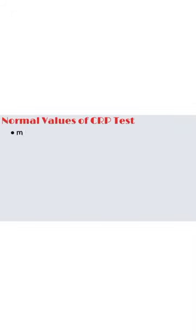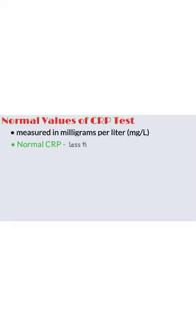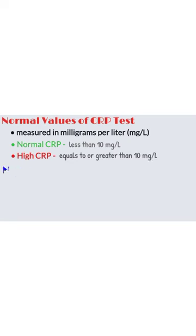Normal values of CRP test. CRP is measured in milligrams per liter. Your CRP test is normal if CRP value is less than 10 milligrams per liter, and your CRP is high if it is equal to or greater than 10 milligrams per liter.